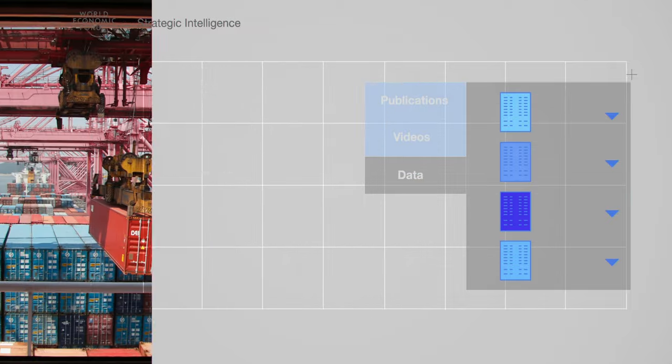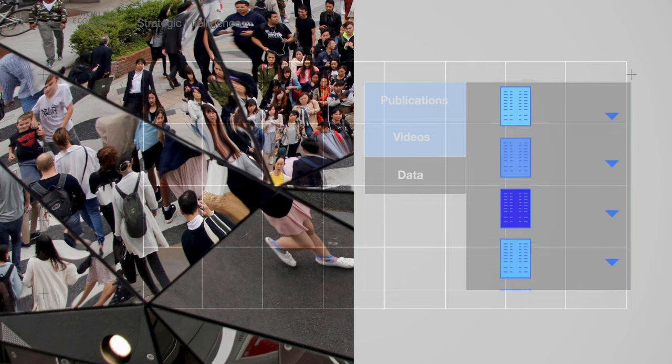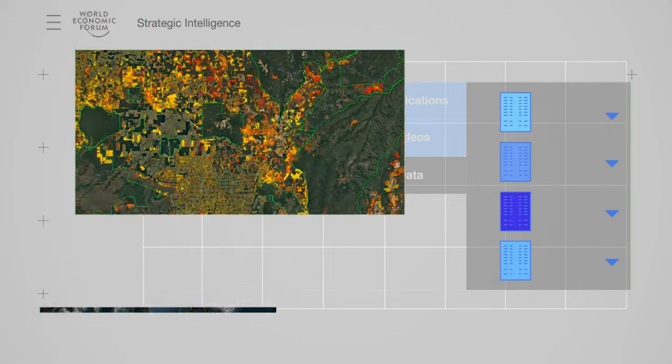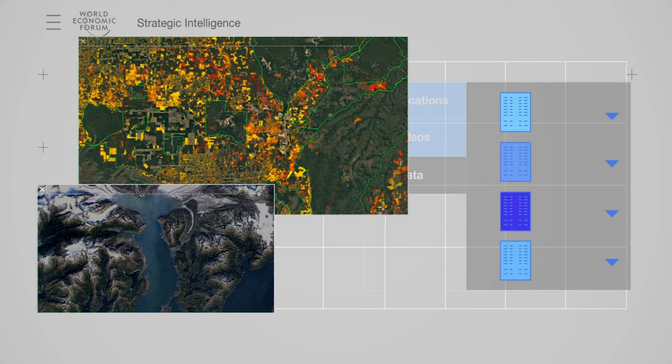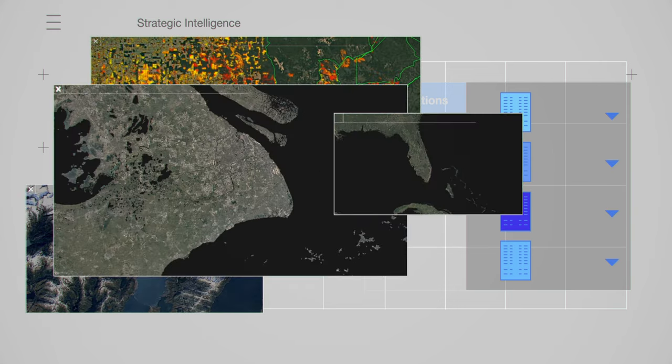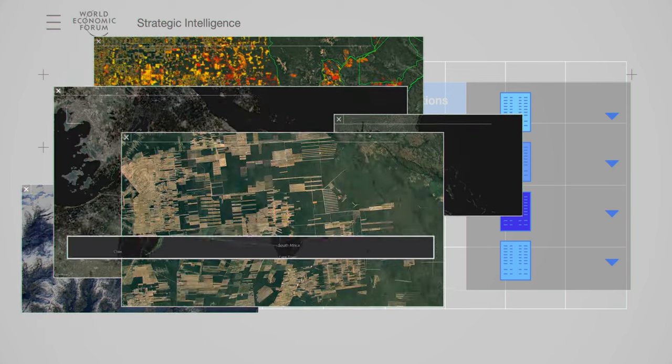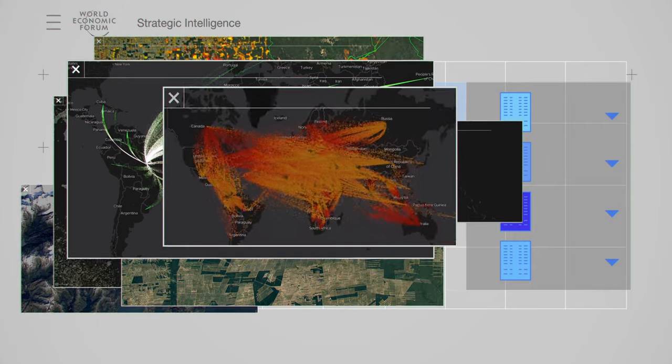The platform also incorporates economic, social and political data, as well as time-lapse satellite imagery, allowing you to visualize trends in areas such as sea level rise, deforestation, global trade flows and the refugee crisis.